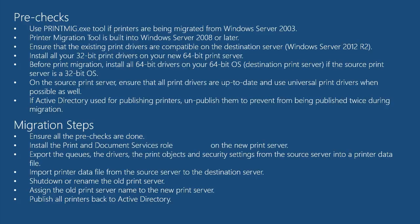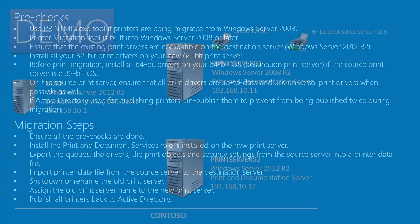The tool will export everything into a printed data file. You will then import that printed data file from the source server to the destination print server. Then you will shut down or rename the old print server and assign the old print server name to the new print server to avoid hostname duplication. Finally, you will publish all printers back to Active Directory and test all the print queues.